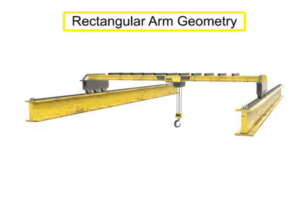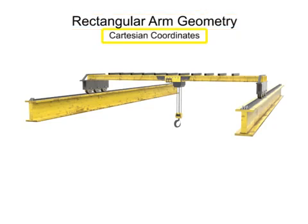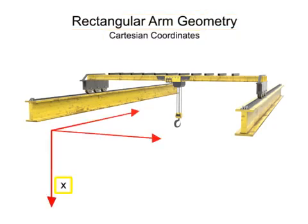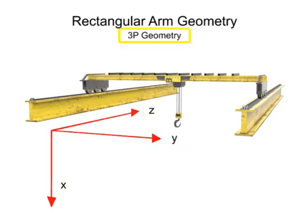Robots with rectangular arm geometry use Cartesian coordinates and move linearly along each of the X, Y, and Z axes. This type of movement is also called 3P geometry, where the P stands for prismatic or linear motion.